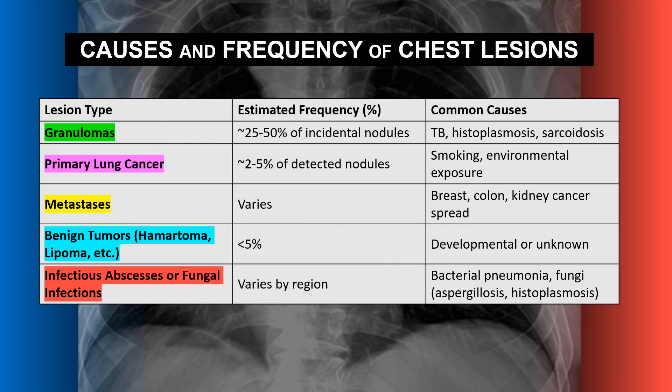Here are some of the more common causes and frequency of chest lesions we'll cover: granulomas from granulomatous conditions like TB, primary lung cancers, lung metastasis, rarely benign tumors, and other things like infectious abscesses or fungal infections.